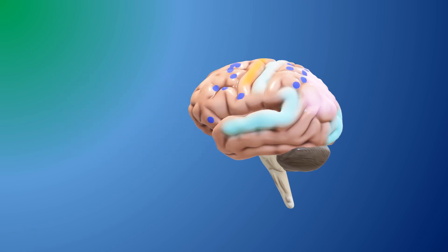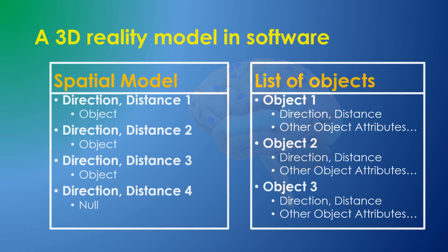We might make an analogous decision in software design. The 3D reality model could consist of an array of directions and distances with references to objects. This way, the directions would all be in a single array or area of the brain.